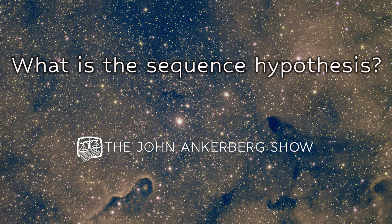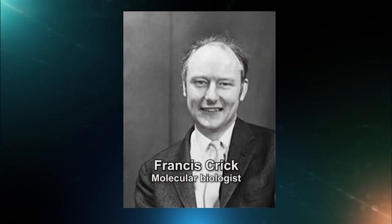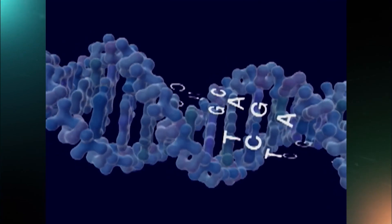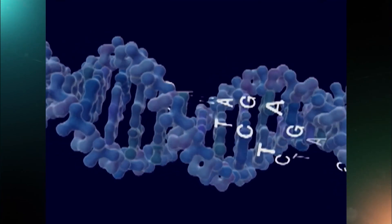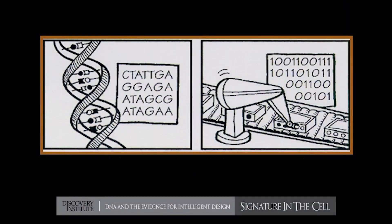There's a lot of information on a DNA molecule. Explain what is called the sequence hypothesis. So Francis Crick formulated this idea of the sequence hypothesis in 1958. The basic idea was that the chemical subunits along the spine of the DNA are functioning like alphabetic characters in a written language, or digital characters like the zeros and ones in a section of software.